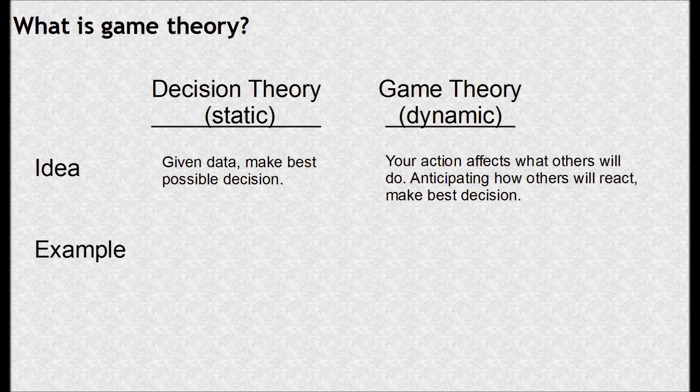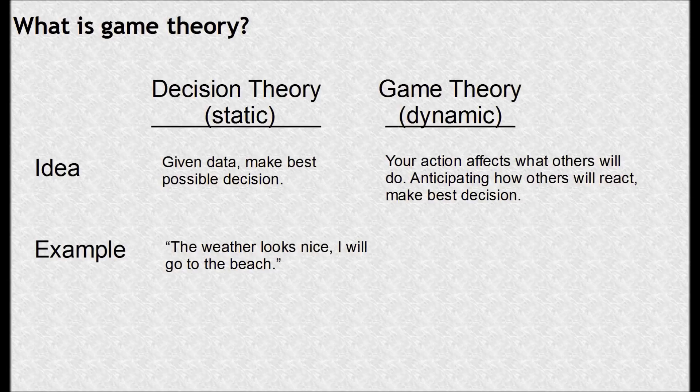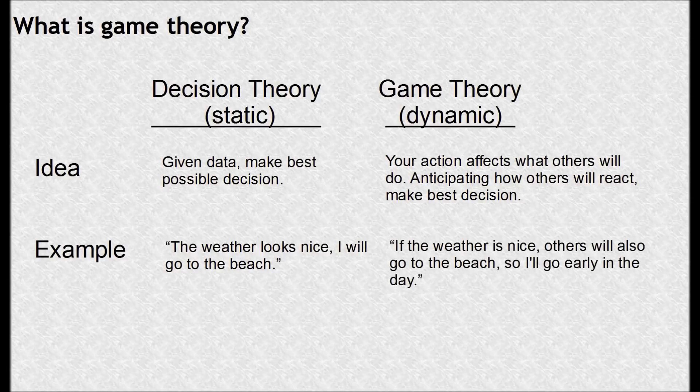A very simple example: in decision theory, you might look at the weather forecast and say the weather looks nice, so the best decision is to go to the beach. But in game theory, you're going to think that if the weather is nice, others are also going to think the weather is nice and they're also going to go to the beach. So you have to think strategically — you'll go to the beach earlier in the day when other people aren't there.